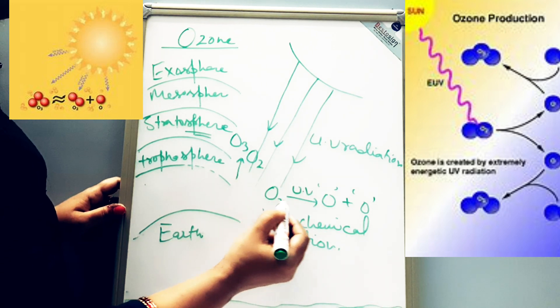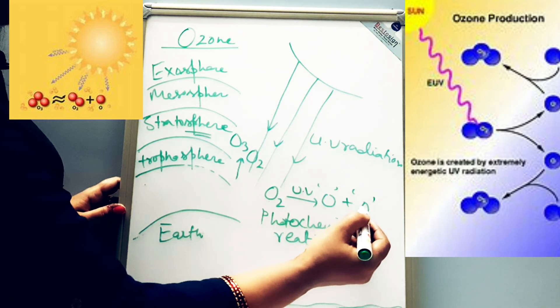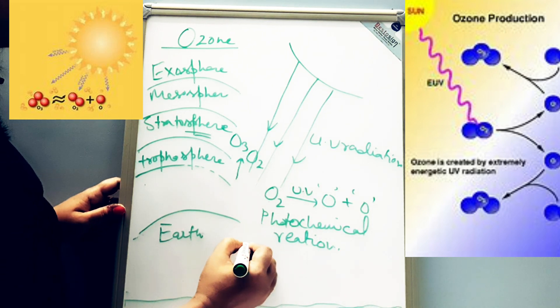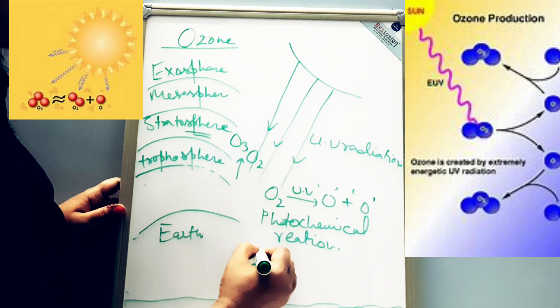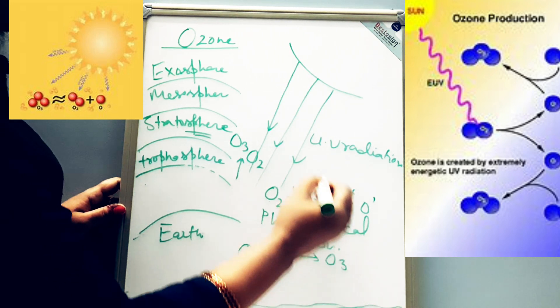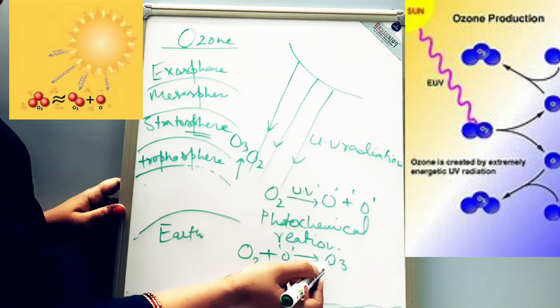So in this way oxygen breaks into two O atoms - two nascent oxygen. Now what will happen: again O₂ will react with one nascent oxygen and form O₃. So in this way formation of ozone takes place naturally. This natural balance has been disrupted by human activities, causing the concentration of ozone to fall.